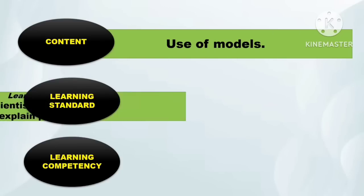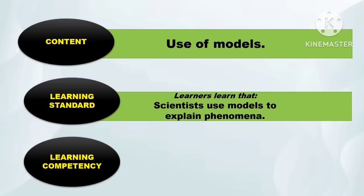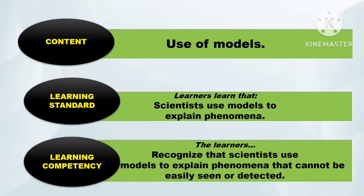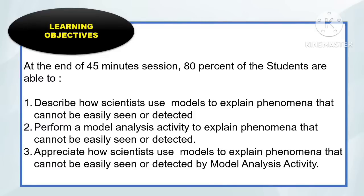For the learning content: the use of models. For the learning standards, learners learn that scientists use models to explain phenomena. And the learning competency: the learners recognize that scientists use models to explain phenomena that cannot be seen, easily seen, or detected. For the learning objectives, at the end of a 45-minute session, 80% of the students are able to: first, describe how scientists use models to explain phenomena that cannot be easily seen or detected; second, perform a model analysis activity to explain phenomena that cannot be easily seen or detected; and third, appreciate how scientists use models to explain phenomena that cannot easily be seen or detected by the use of a model analysis activity.